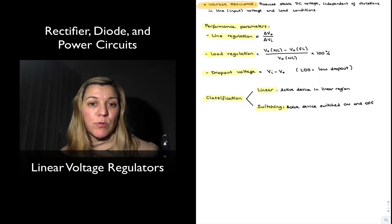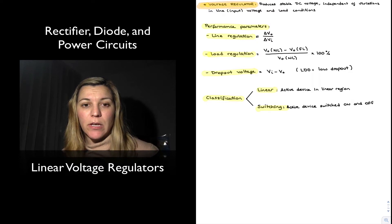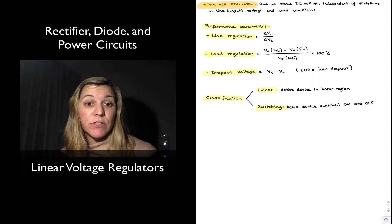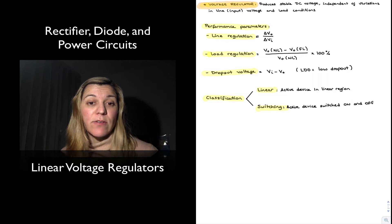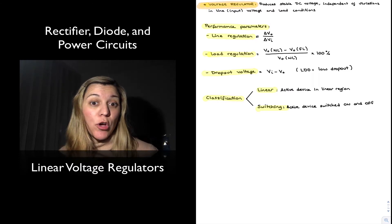In broad general terms we can classify regulators as linear regulators versus switching regulators, depending on how they operate. In the case of a linear regulator, they contain active devices that are operating in their linear region and therefore they're always on. In the case of switching regulators, they contain active devices that are being switched on and off, and therefore they're not always on.